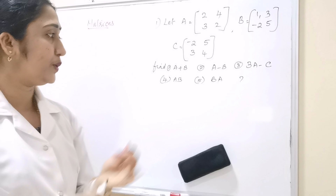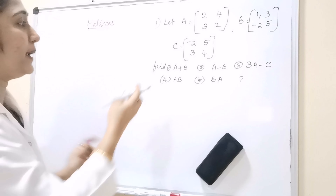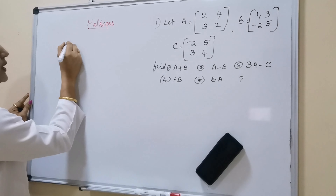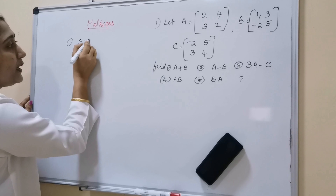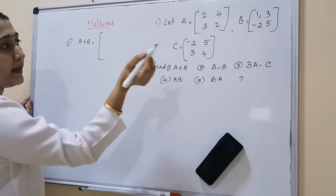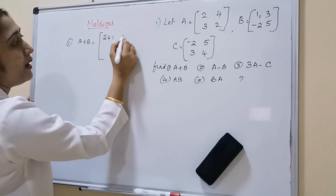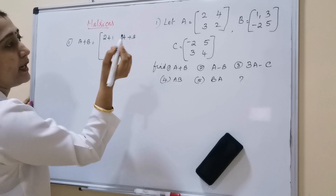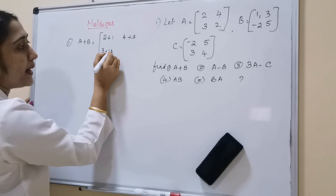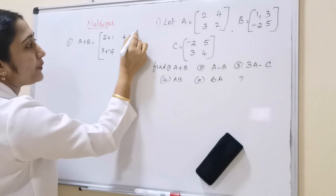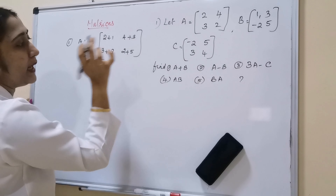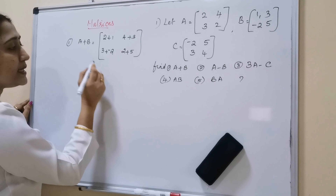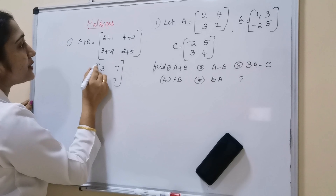Let us do them one by one. A plus B means addition of the matrices. That is equal to [2+1, 4+3; 3+(-2), 2+5]. Adding the A elements and B elements, we get [3, 7; 1, 7]. So this is A plus B.